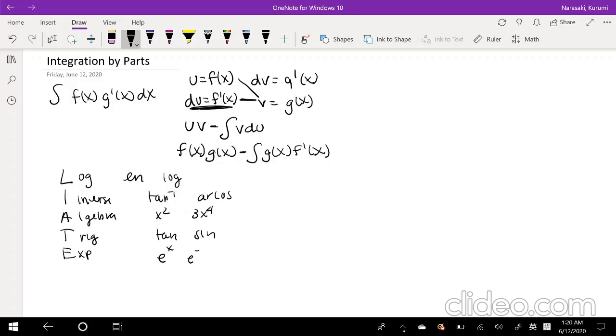Or 1 over e to negative x, something like that. When you pick your u, you want to go down the list like this. And you're probably like, wait, why? Why would you do that?